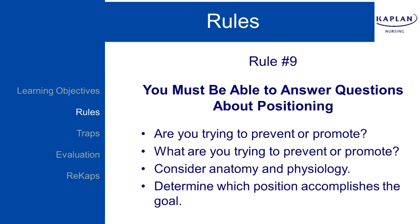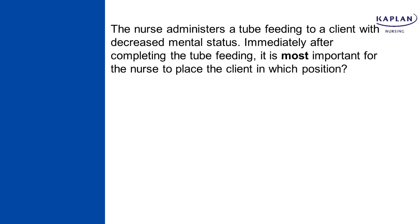Rule number nine: you must be able to answer questions about positioning. You can memorize all sorts of positions and the circumstances they're used in, but I'm going to give you a way to think through positioning questions so you don't have to memorize. Use every opportunity to think through questions and engage in critical thinking. With positioning, you're always trying to prevent something or promote something — that's the first thing you think about. Then consider anatomy and physiology, and determine which position best accomplishes the goal.